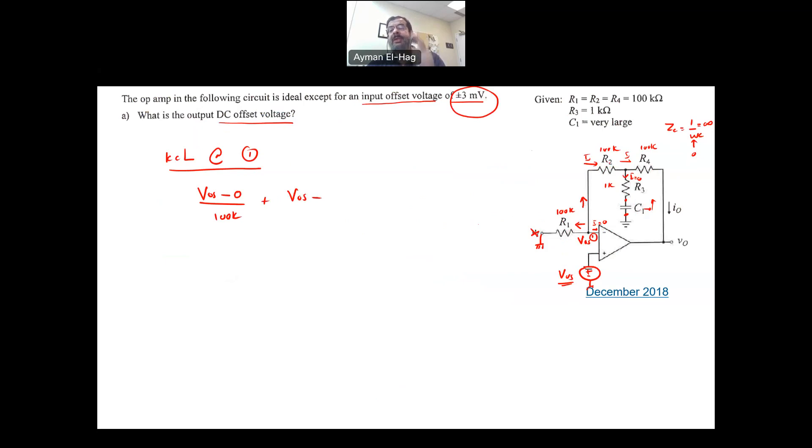So, this becomes VOS minus Vout, divided by the 100 plus 100 kilo ohm, because they are in series, which is 200 kilo ohm. And this is equal to zero. Let me multiply everything with 200 kilo, and you will get 2 VOS plus VOS minus Vout equal to zero, or 3 VOS equal to Vout. So, your Vout equal to three times plus minus three millivolt. So, you will get plus minus nine millivolt. That is your output voltage due to the offset.